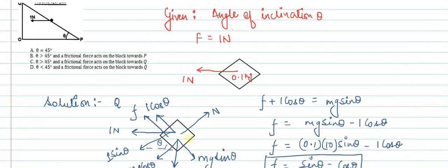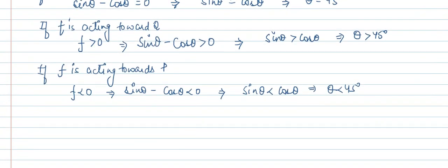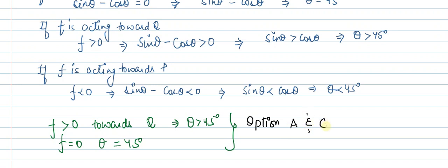The correct answers are A and C. For F greater than 0 with friction acting towards Q, theta should be greater than 45 degrees, matching option C. For F equal to 0, theta should equal 45 degrees, matching option A. Therefore, options A and C are the correct answers. This completes the solution to this question.